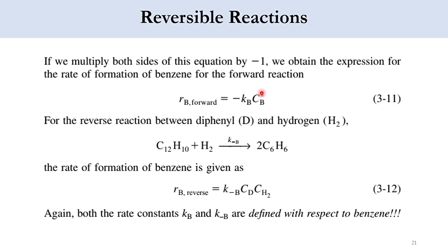For the reverse rate: one mole of diphenyl (C₁₂H₁₀) and one mole of hydrogen react to produce two moles of benzene, with specific reaction rate constant K_{-B}. So R_B(reverse) = K_{-B} · C_D · C_{H₂}. Both rate constants K_B and K_{-B} are defined with respect to benzene — positive B means forward, negative B means reverse.